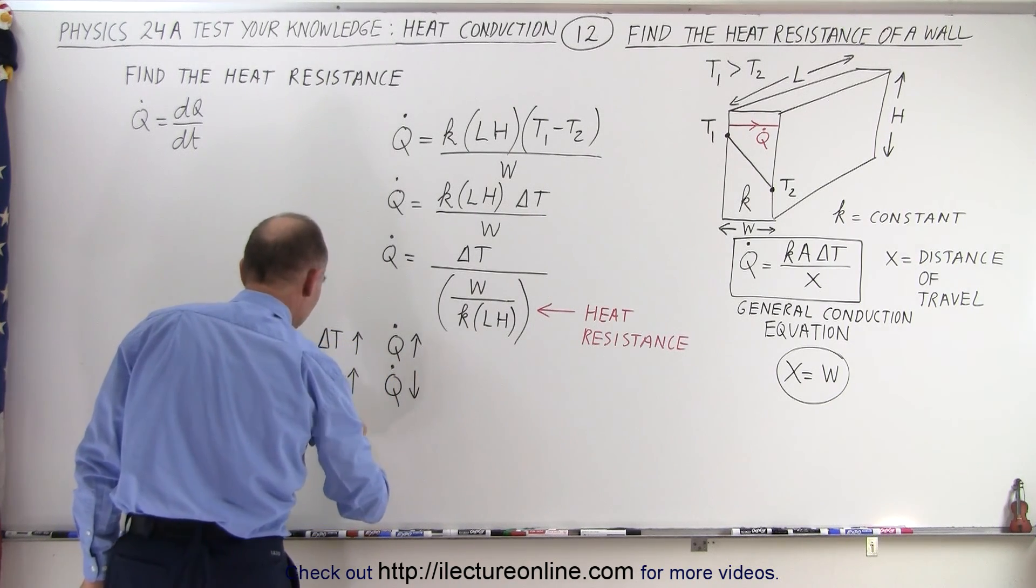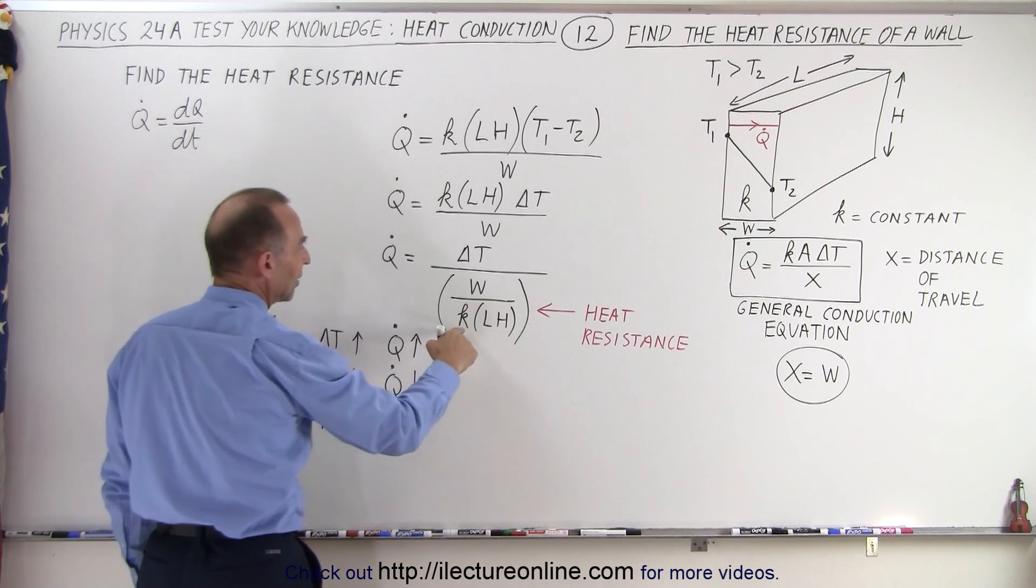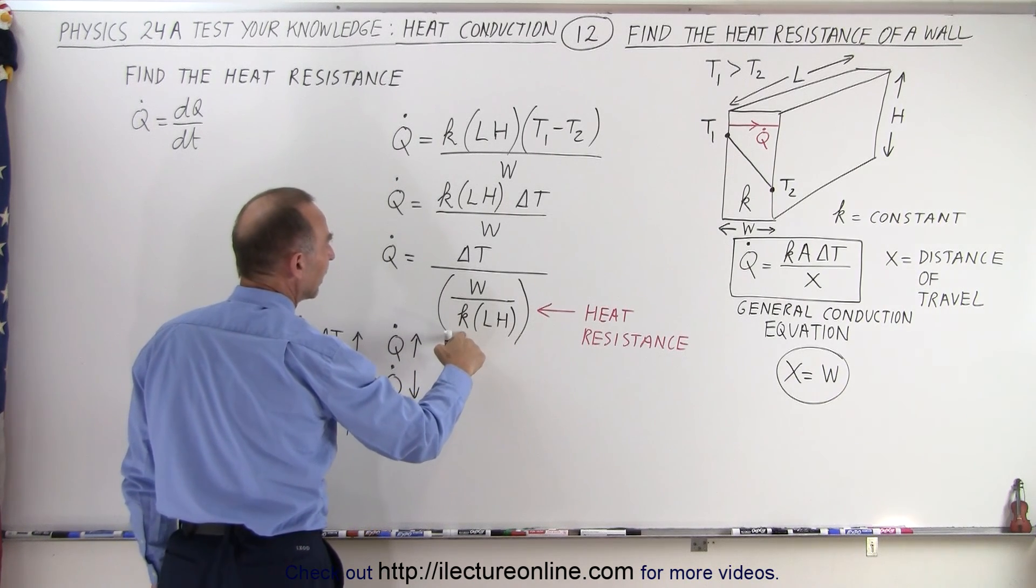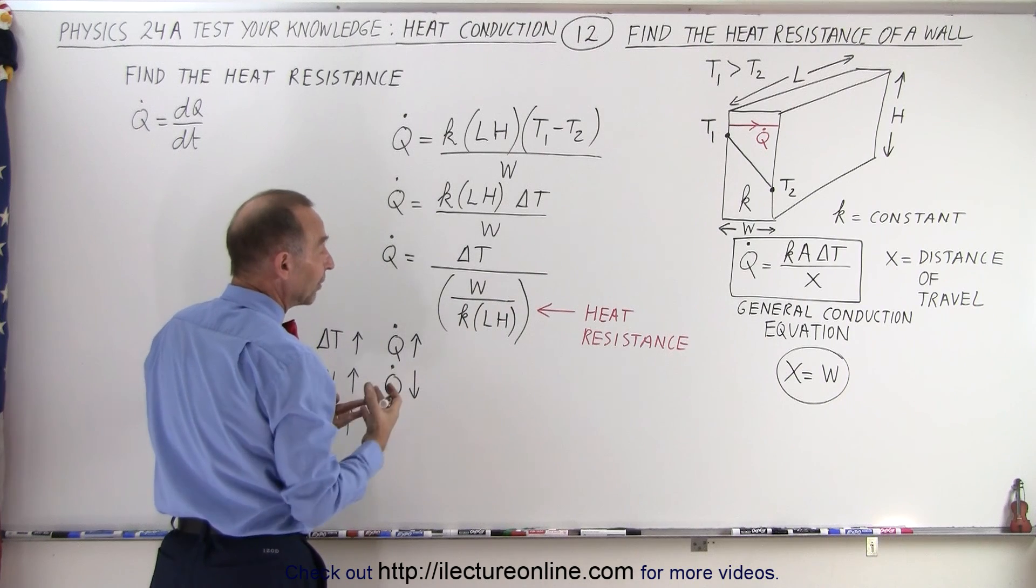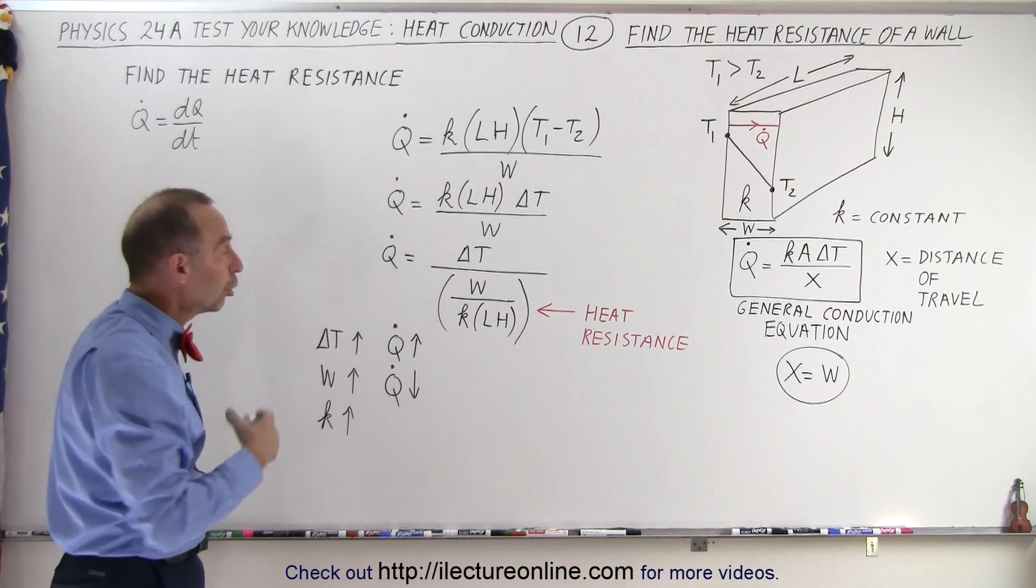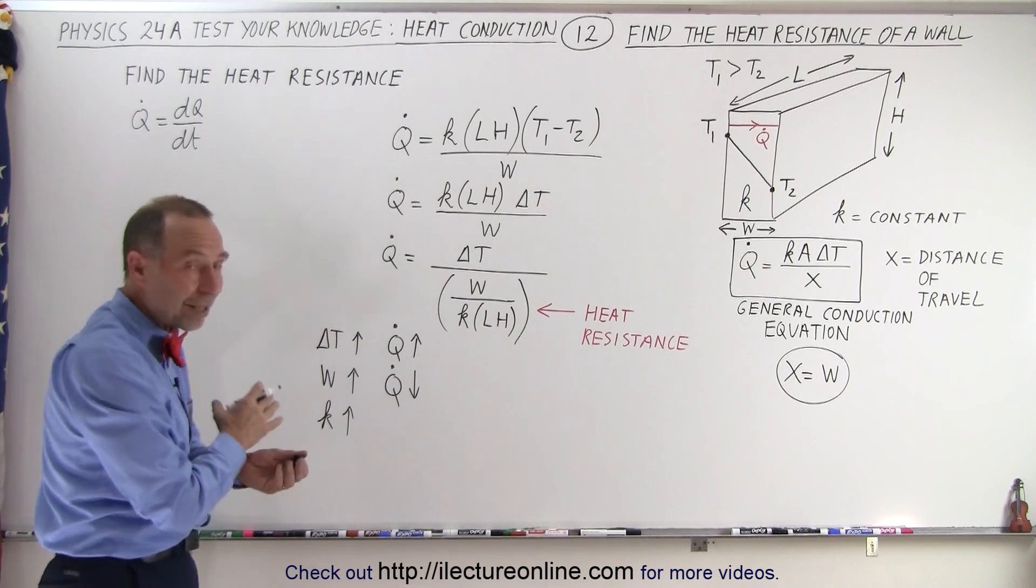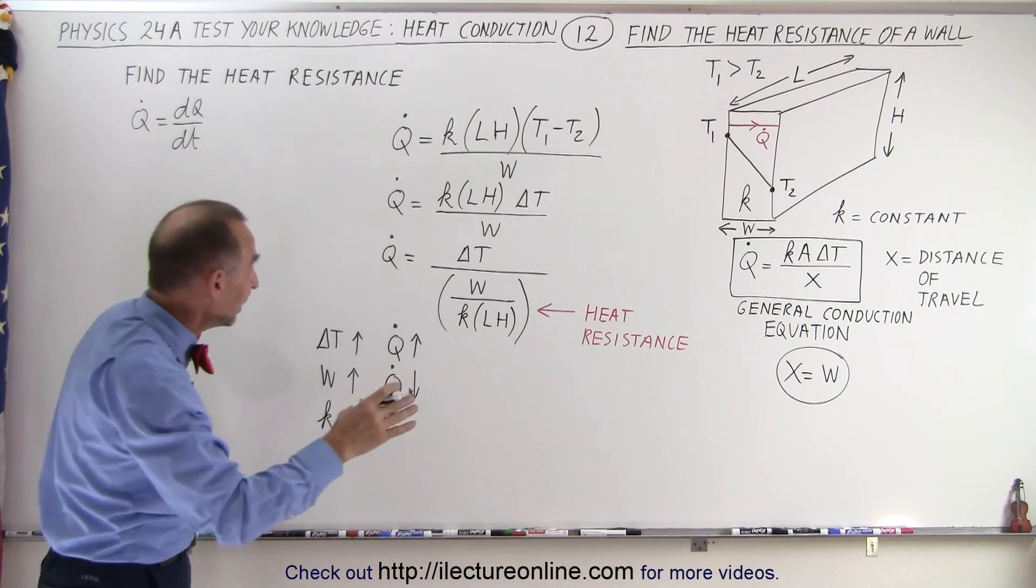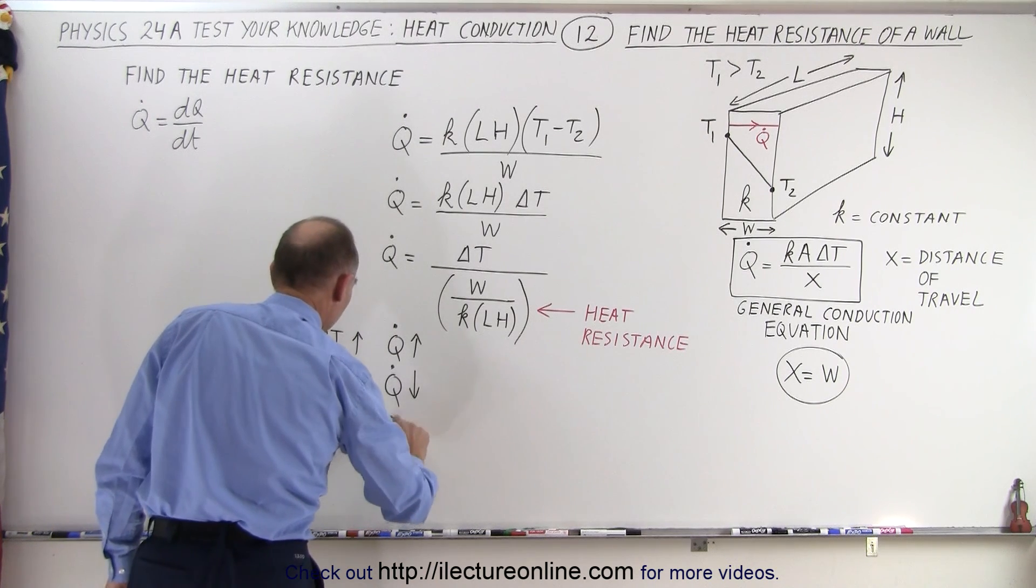What if K goes up? If K goes up, notice that K is in the denominator of the denominator. That means if there's a larger heat conductivity constant, that means heat flows more freely. That means Q dot will go up.